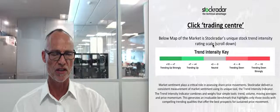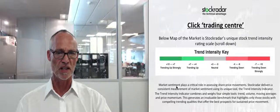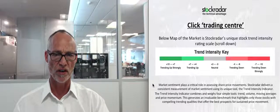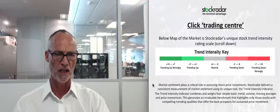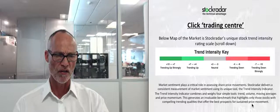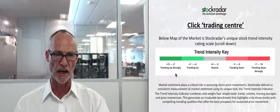Below the Market Map is the unique Trend Intensity Rating scale. It shows the strength or weakness of a trend. Market sentiment plays a critical role in assessing share price movements. Stock Radar delivers a consistent measurement of market sentiment using its unique tool — the Trend Intensity Indicator. It combines and weighs four simple tools: trend, volume, moving averages, and price momentum. This generates an invaluable benchmark highlighting only stocks with compelling trending qualities and the best prospects of sustained price movement. It acts as a filter and must confirm all my breakouts.